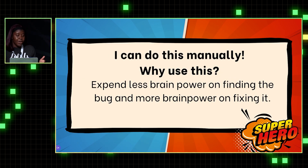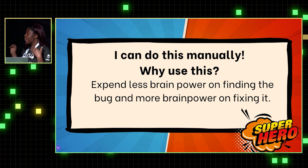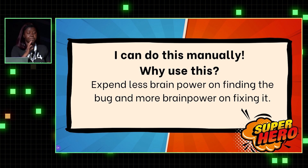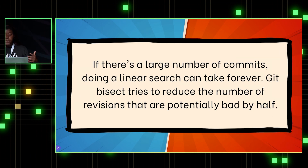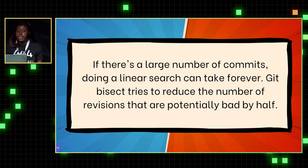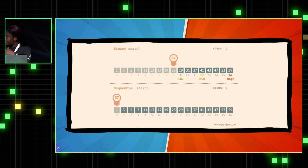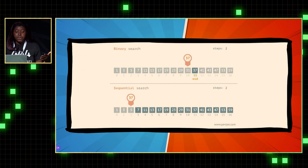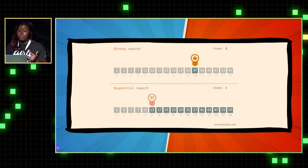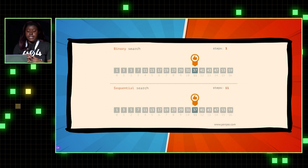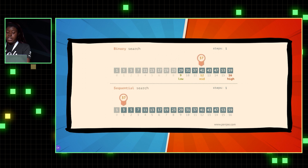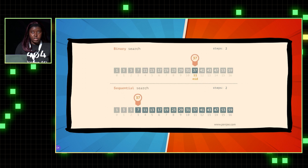You might be thinking, why would I need Git to go through my commit history? I can do that myself manually. But why not expend way less brain power finding the bug and spend more brain power actually fixing it? Also, if you have a project with a large number of commits, doing a linear search can take forever — just imagine going one by one by one. But Git Bisect uses a binary search algorithm, so it's going to reduce the number of potentially bad revisions by half. If you're not familiar with a binary search algorithm, it can find the number 37 in about three steps, whereas a sequential linear search takes about 11 steps. That's how much more efficient it is.